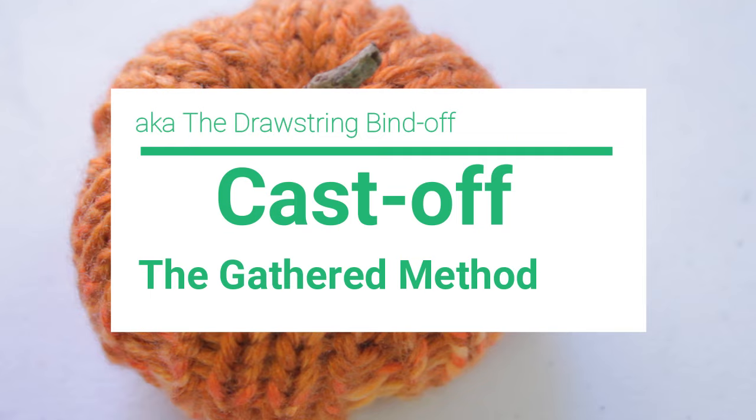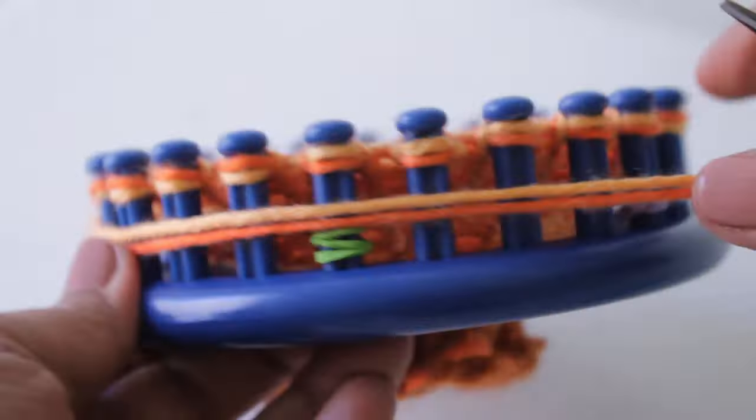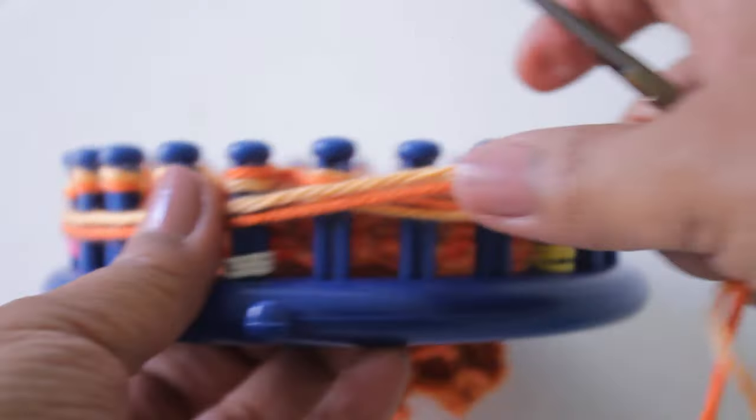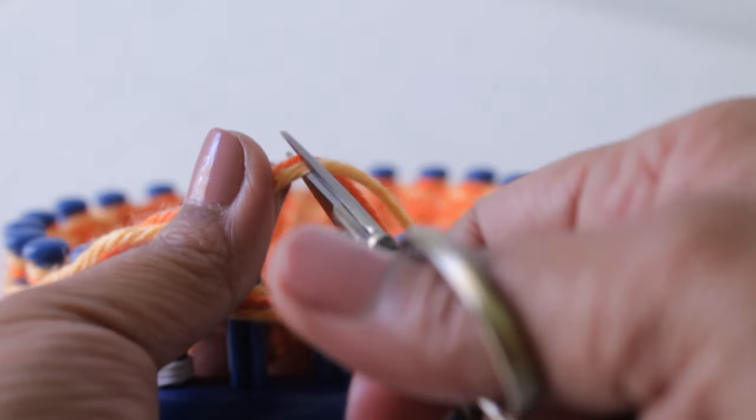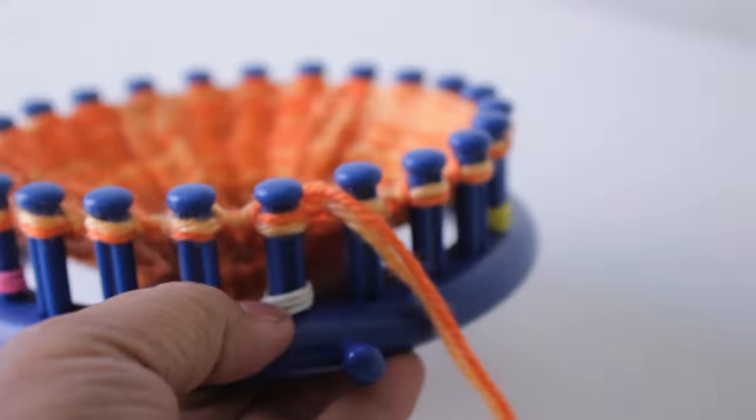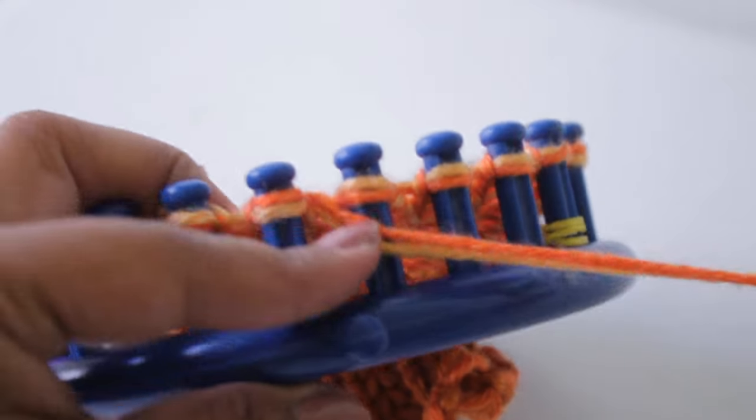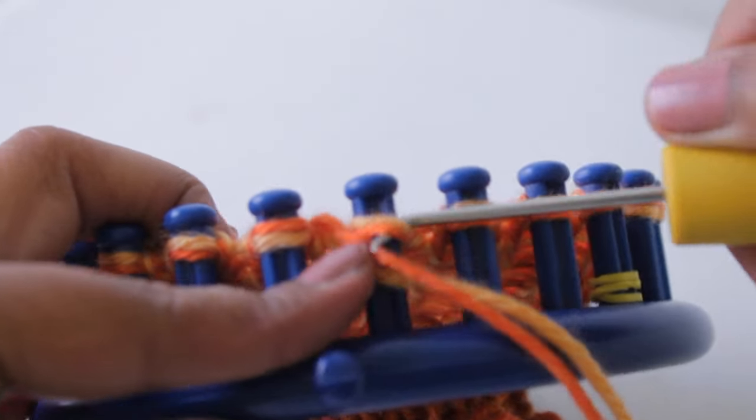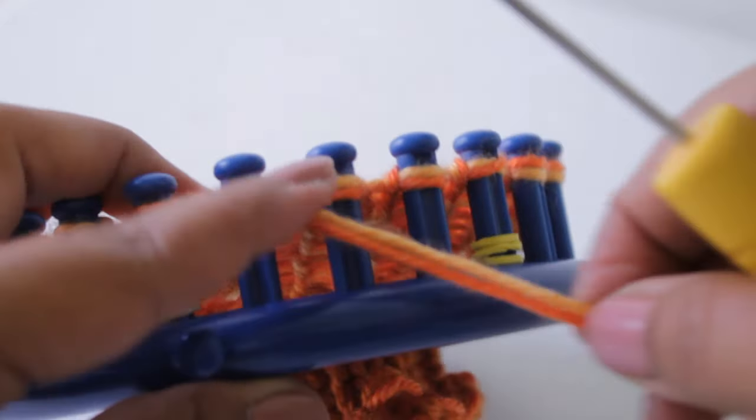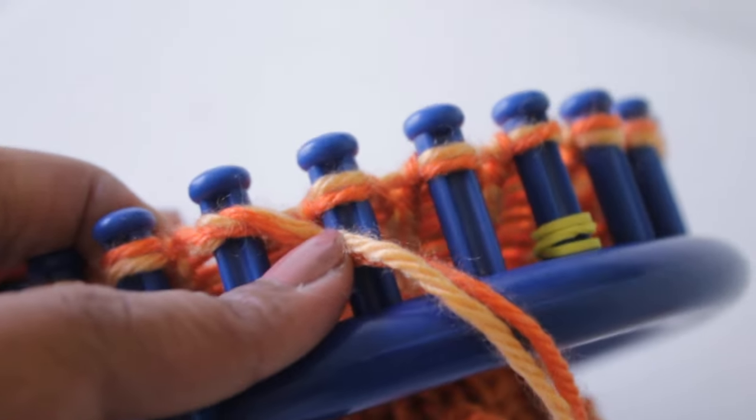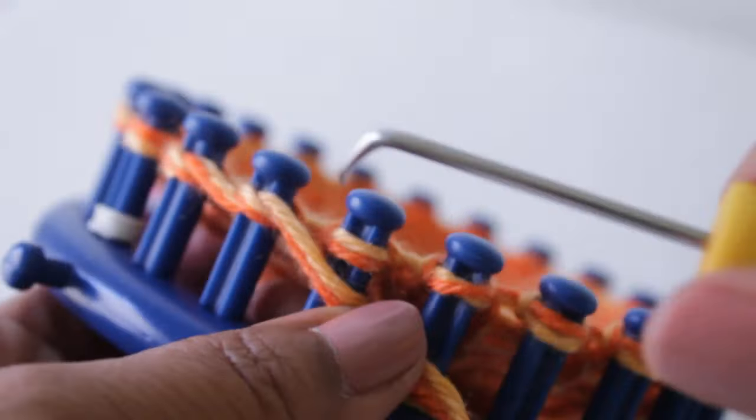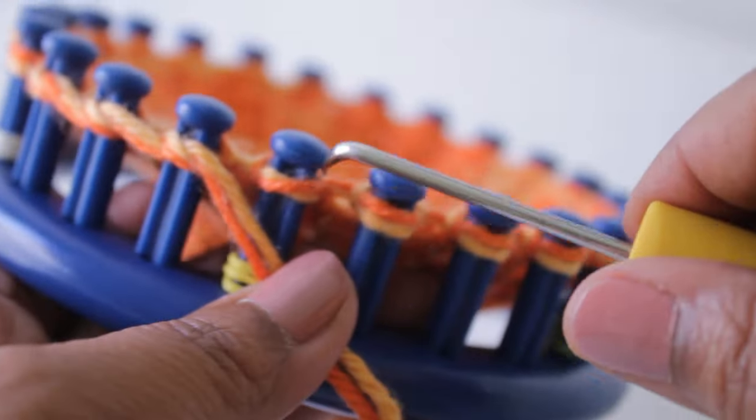Now you're ready for the cast off. So grab your working yarn and you're gonna wrap it around your loom about one and a little bit. Then cut the working yarn and get your hook from the top. You're going to scoop up the yarn and feed it through the loop. And just continue to do this for all 24 loops. So you get the hook from the top, scoop up the working yarn, and feed it through.